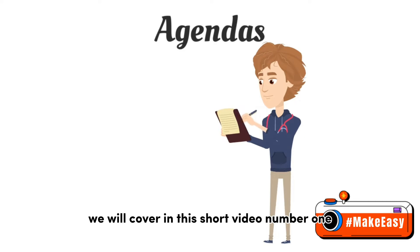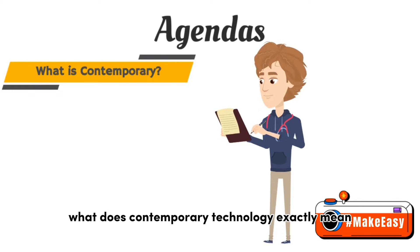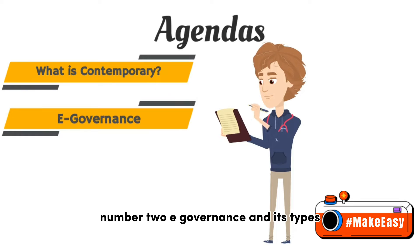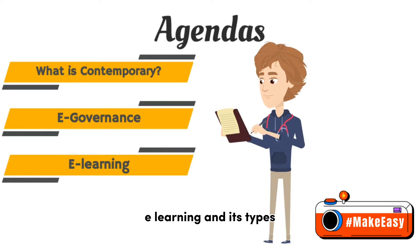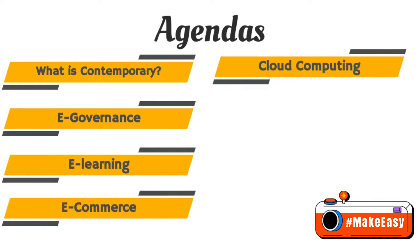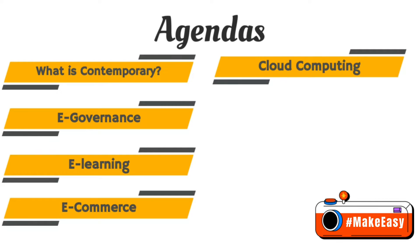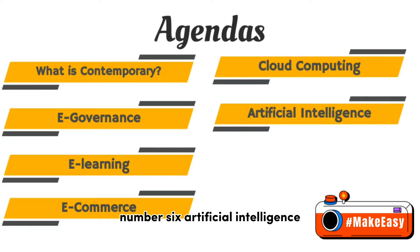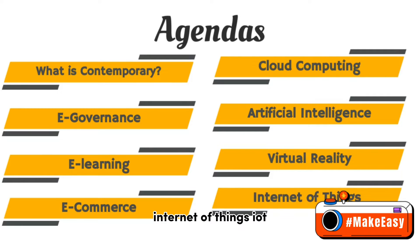Here are the topics we will cover in this short video. Number 1: what does contemporary technology exactly mean. Number 2: e-governance and its types. Number 3: e-learning and its types. Number 4: e-commerce. Number 5: cloud computing, its services and types. Number 6: artificial intelligence, its applications and uses. Number 7: virtual reality and its applications. Number 8: Internet of Things (IoT).